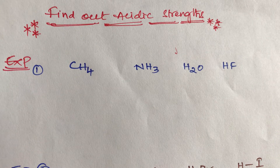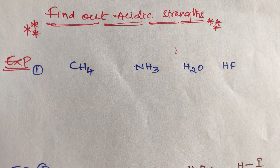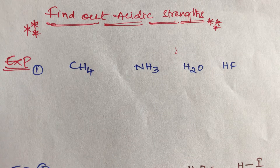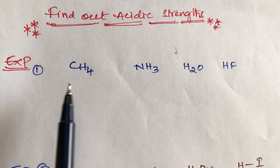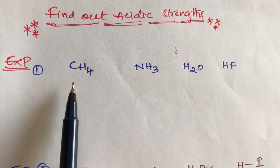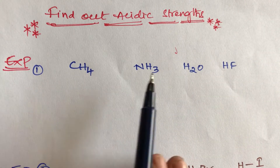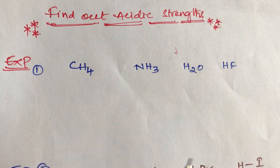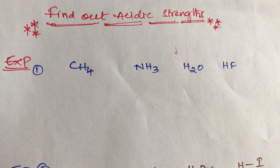Hello students. Now a very important topic: find out the acidic strength order. Given the following compounds — CH4, NH3, H2O, and HF — which one is more acidic in nature?